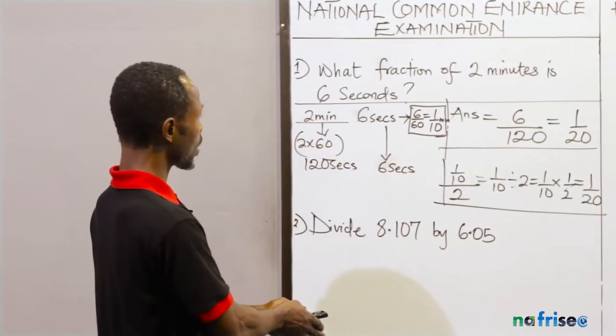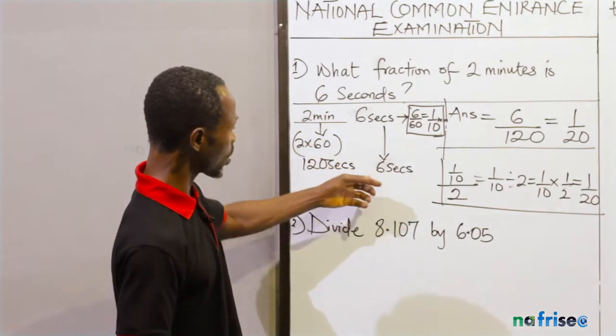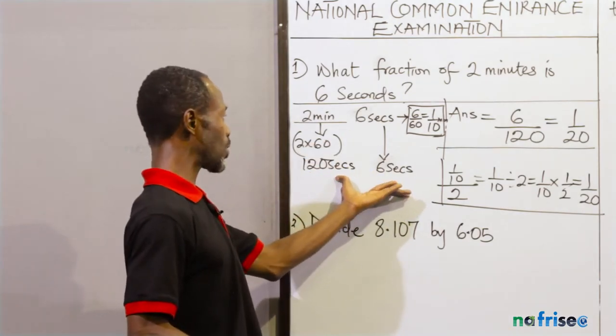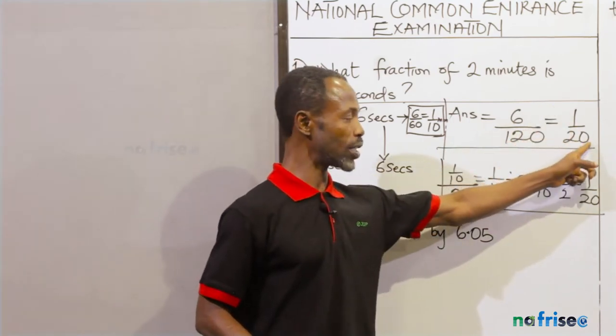or you take the minute to seconds so that you deal with it in seconds. You cannot carry minutes over seconds and get the right answer. So what I did in the first one is this: I changed this 2 minutes to seconds. It became 120 seconds. 6 seconds is 6 seconds.